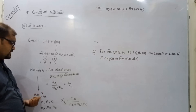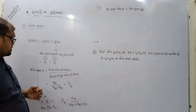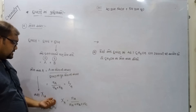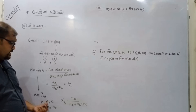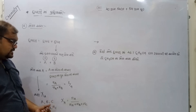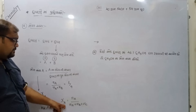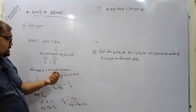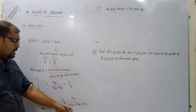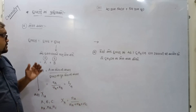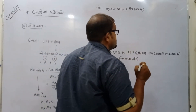ધારો કે દ્ ર ા વ ણ મ ા ં nc ઘ ટ ક ો છ ે. A ન ા મ ો લ અ ં શ (ζa) = na ÷ (na + nb + nc). ઉ દ ા ર ણ ન ી મ દ ત ે — ζa = na ÷ કુ લ મ ો લ. m ો લ અ ં શ ઉ દ ા ર ણ ઉ ત ્ ર.